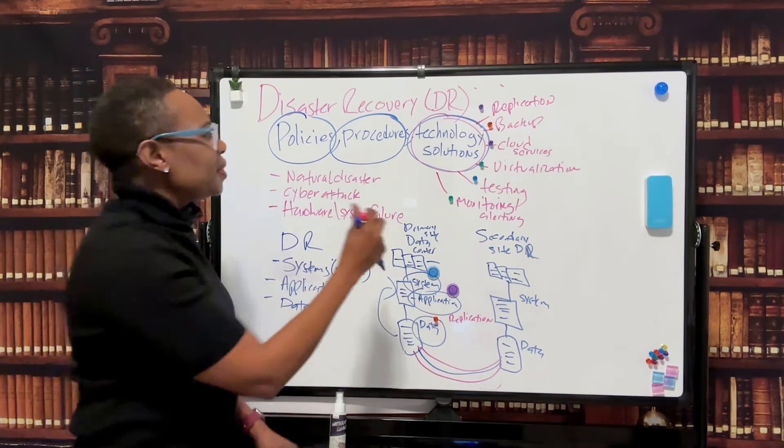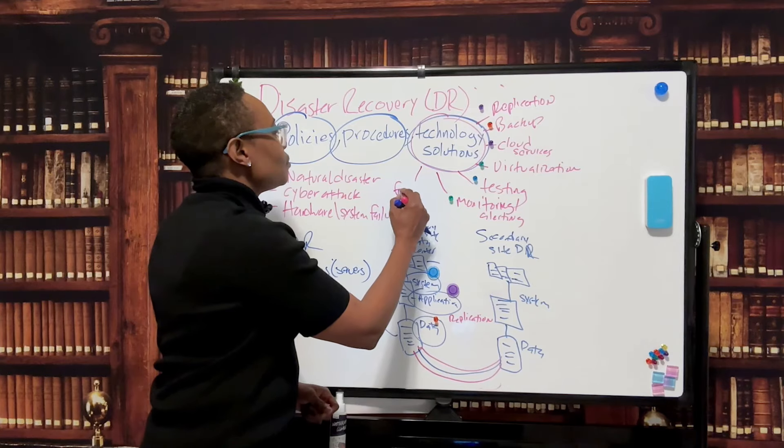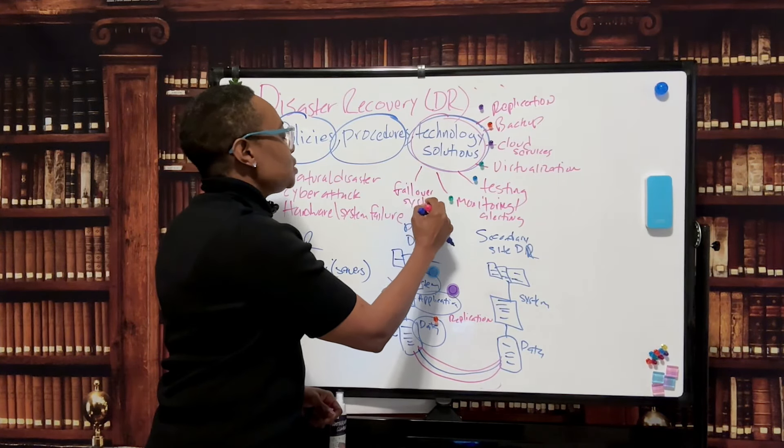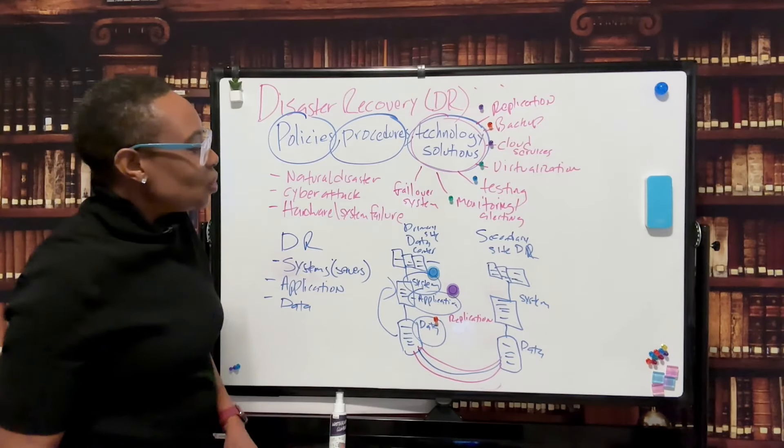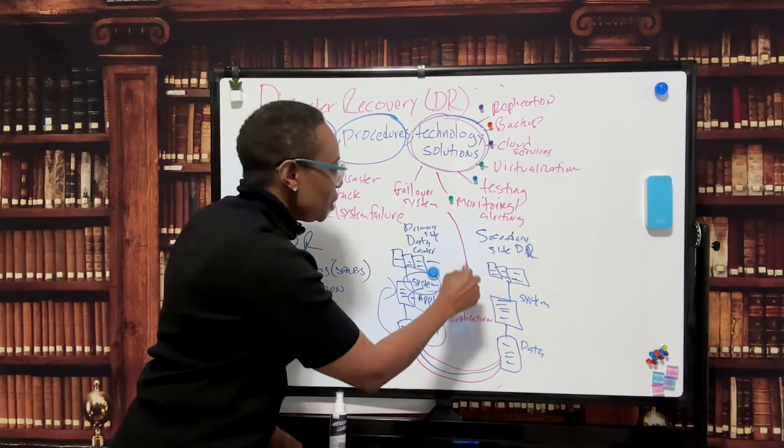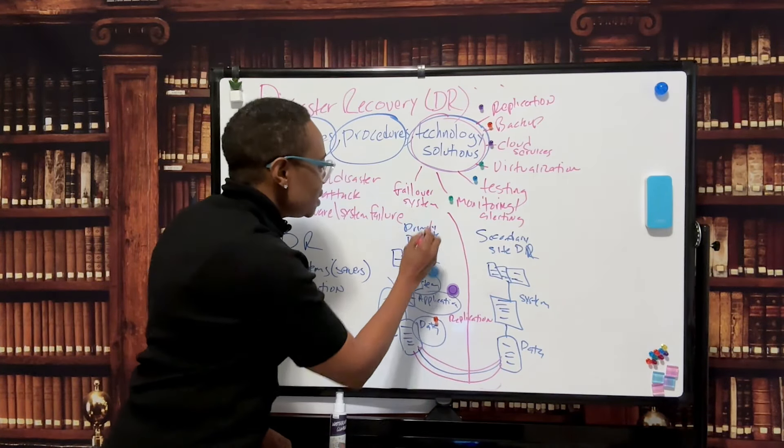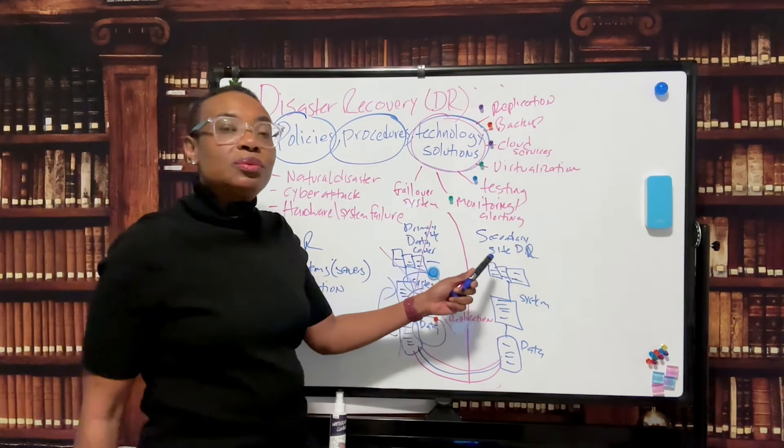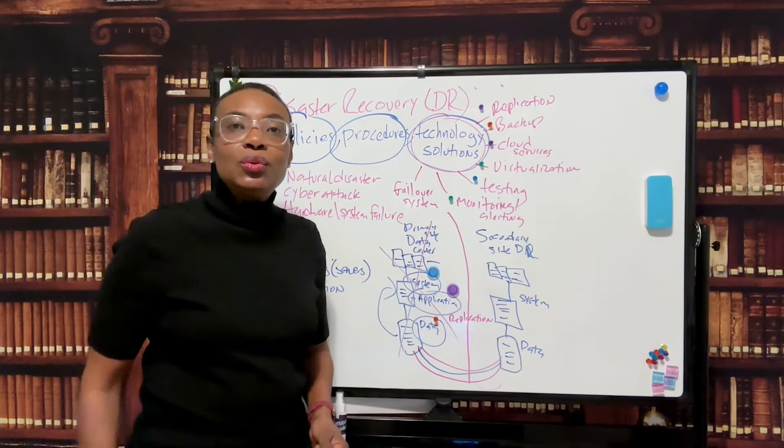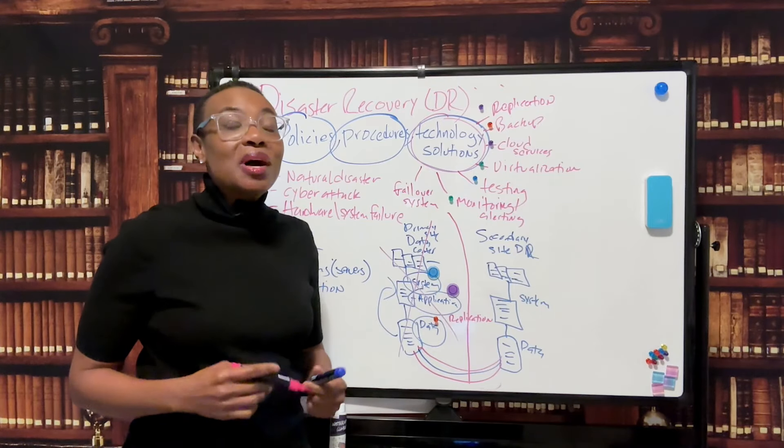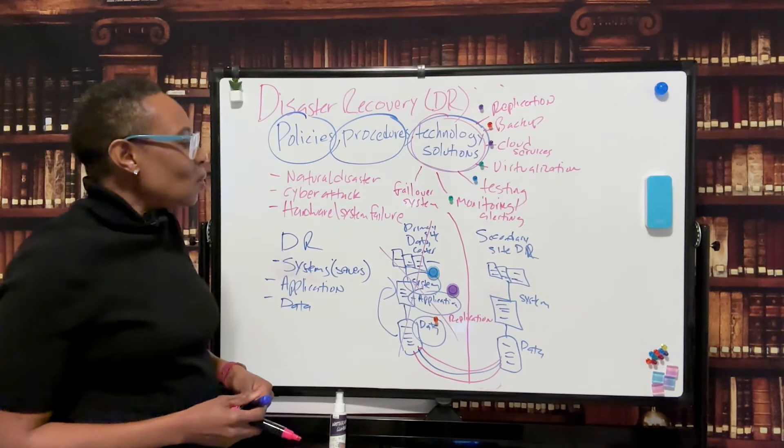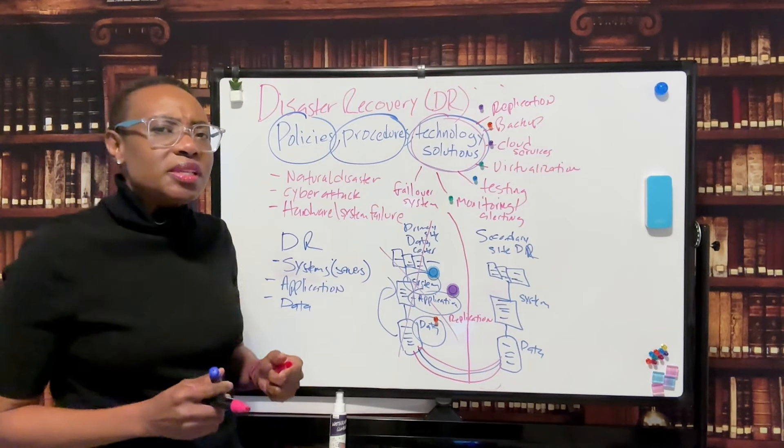So every time there is a change to the primary site, it gets replicated onto the secondary site. That way this site is always production ready. Okay, and one other thing I want to add here is failover systems. Because you really want your DR process to be automatically automated. So this site goes down, you want everything to automatically go to the secondary site. So in other words, 100% high availability.